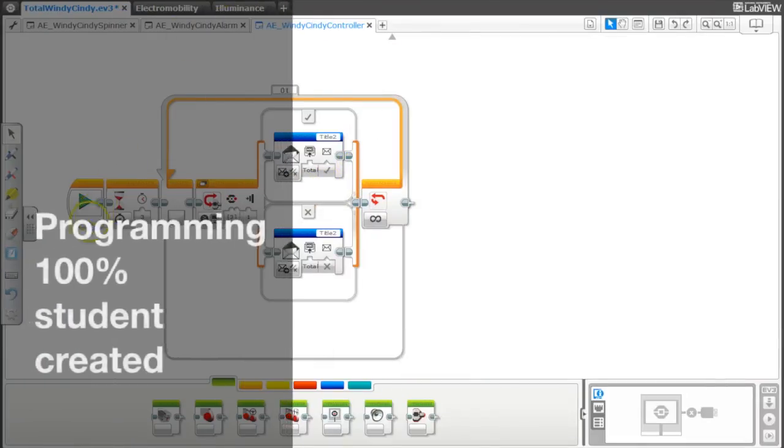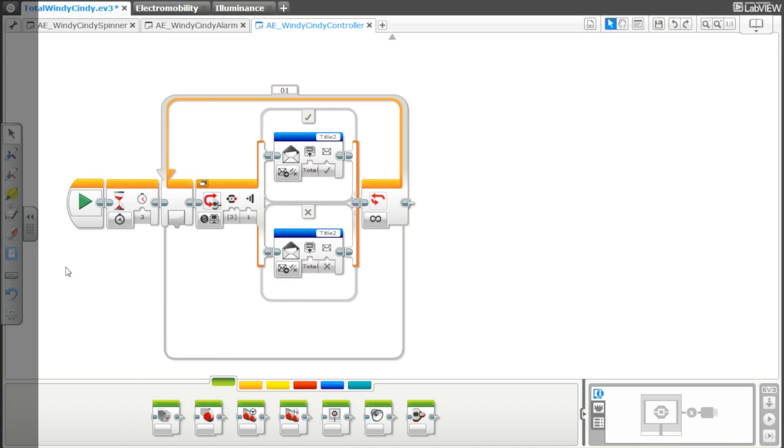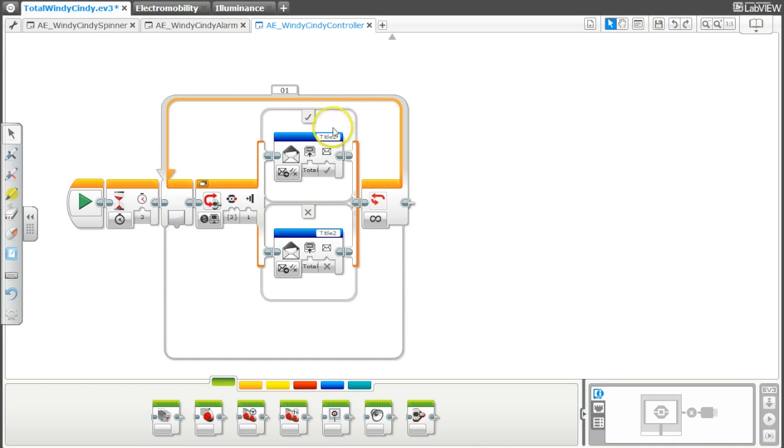Okay, so to begin, this is the Windy Cindy controller. This is kind of like what you saw with the controller brick that sends a message to the spinner. It uses the Bluetooth with a message called title 2, and it checks if a button is pressed on the brick of the controller, and if that brick is being pressed, then it sends a message with a value of true.